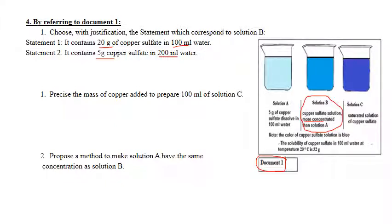It says copper sulfate solution is more concentrated than A. Let's see - in A there is 5 grams in 100 milliliters of water, and B should be more concentrated than A.